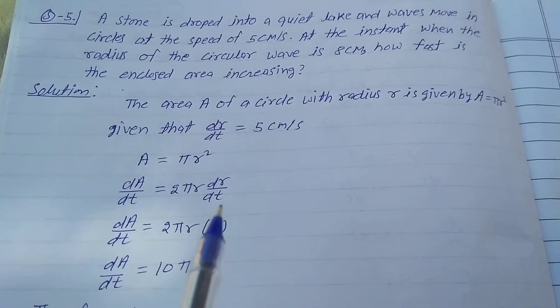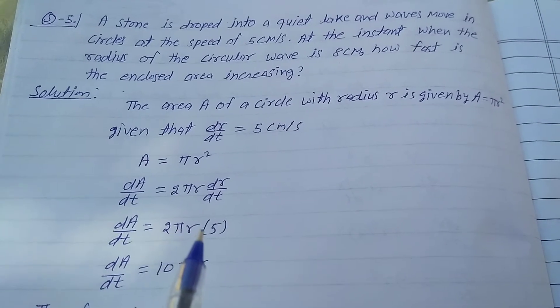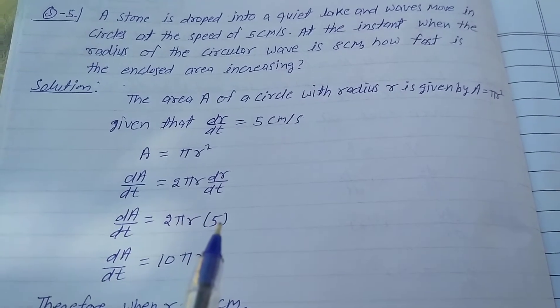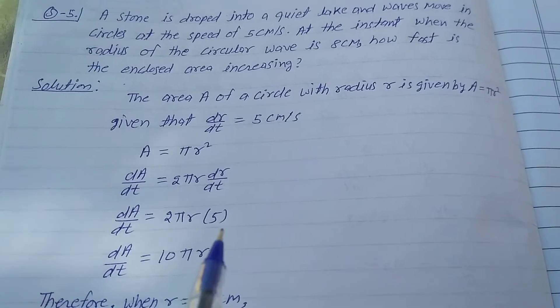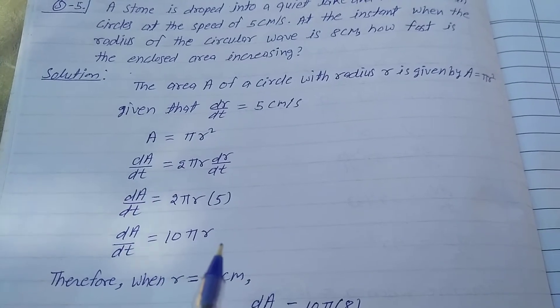dA/dt equals 2πr times 5. Five times 2 is 10, so dA/dt equals 10πr.